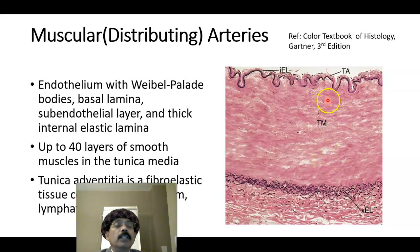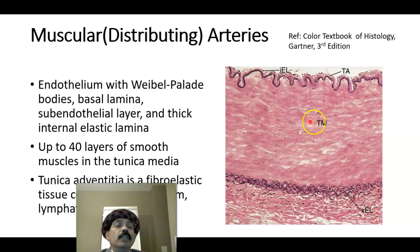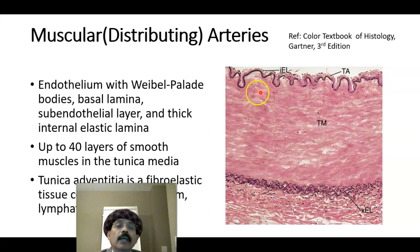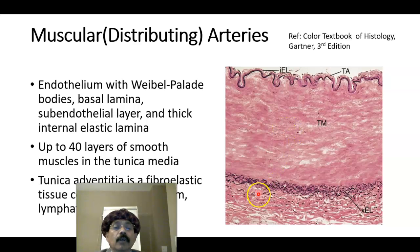A small muscular artery may have only five layers of smooth muscle. Elastic fibers are present in between the smooth muscles, and these smooth muscles are slightly smaller than the smooth muscles of the intestine. In this slide, the internal elastic lamina is very prominent in the muscular arteries, also called distributing arteries or medium-sized arteries.